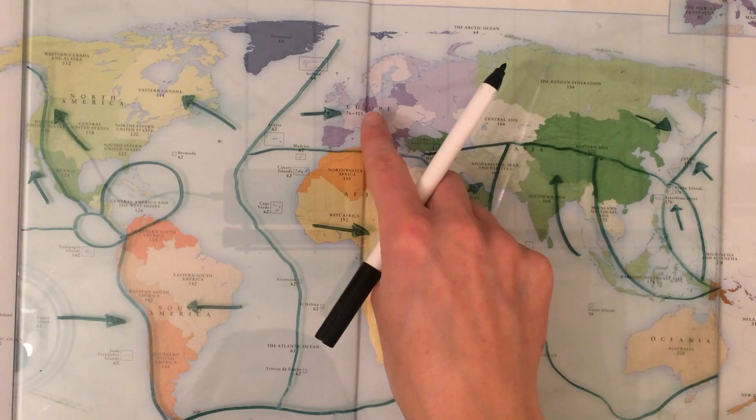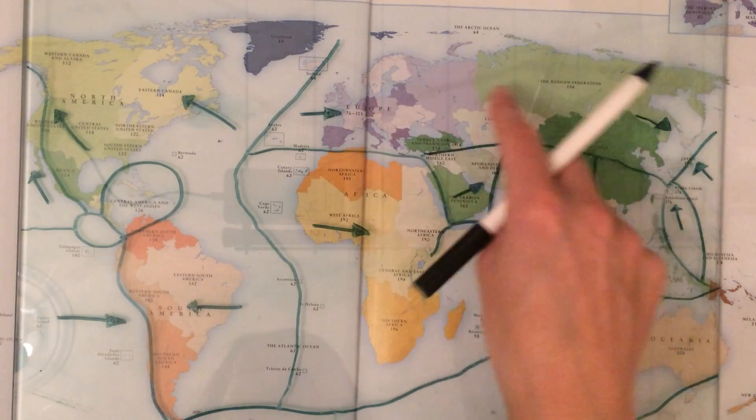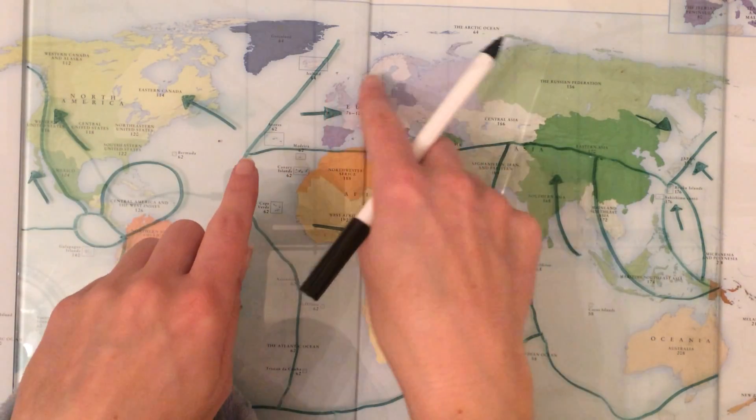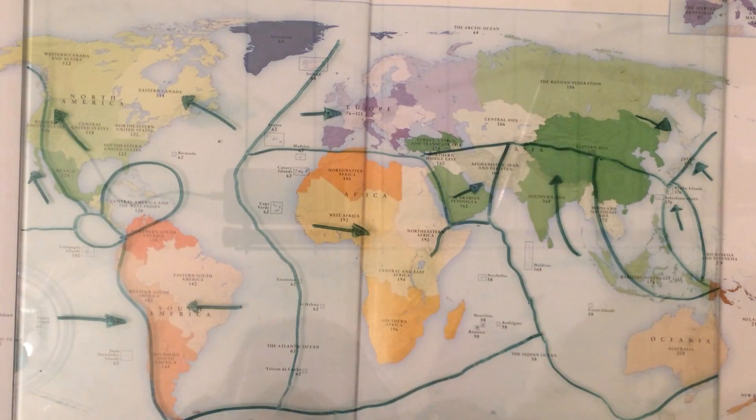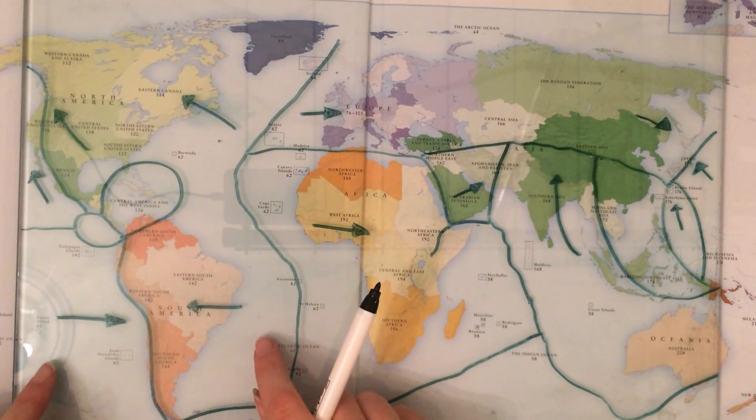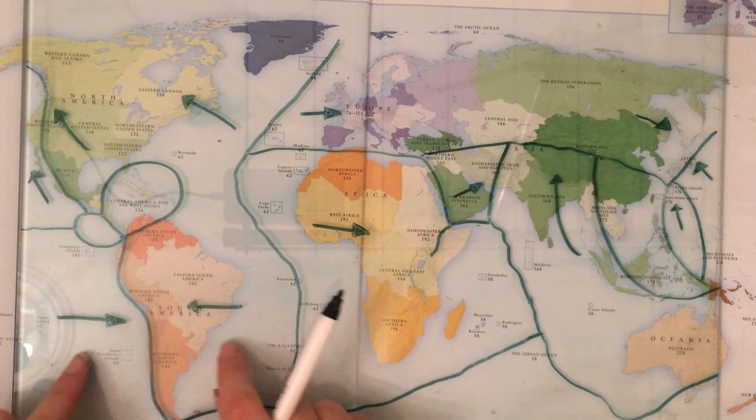The Eurasian plate, so called because it's part of Europe and Asia, the Eurasian plate is moving away from the North American plate, again it's ripping apart. And other examples are where the plates come together.